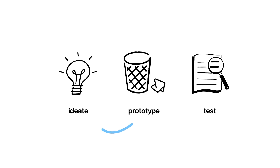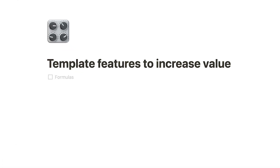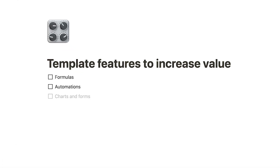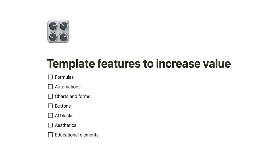Once you have a solidified idea for your template that solves a clear customer problem, step two is to prototype or create the template itself. At the end of the day, all Notion templates are a thoughtful combination of blocks. If you're watching this course, you're probably already an expert in combining those blocks to build tools. But if you're wondering which building blocks can differentiate your templates, they tend to be some of the more technically complex items like formulas, automations, charts and forms, buttons, and AI blocks. There's also a lot of value in the aesthetics and educational elements too.